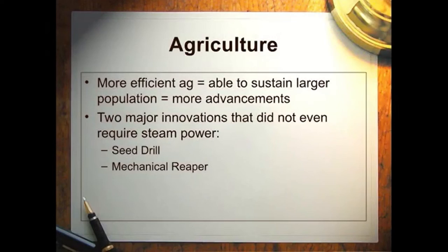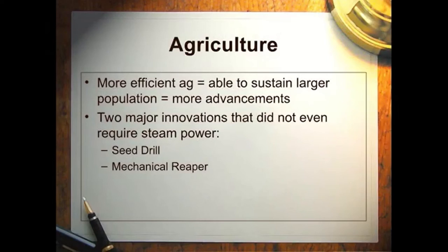We're going to see some major advancements in agriculture — common-sense stuff that surprisingly took way longer in civilization to develop than it should have. Some ideas involving steam power won't come until the late 1800s, but the basic idea of how to improve agriculture dates all the way back to the early 1700s. The two major innovations are the seed drill and the mechanical reaper.